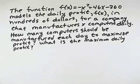The function f(x) equals negative x squared plus 46x minus 360 models the daily profit f(x) in hundreds of dollars for a company that manufactures x computers daily. How many computers should be manufactured each day to maximize profit, and what's the maximum daily profit?